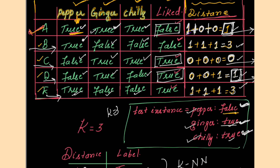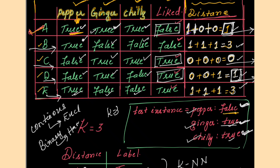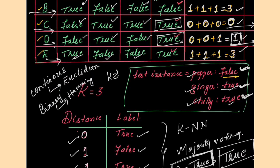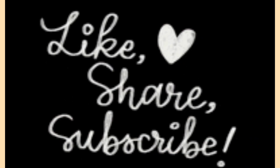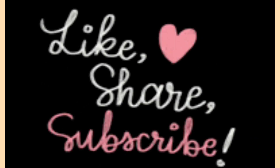The criteria for predicting the label remains the same in KNN, whether you are using Hamming distance or Euclidean distance. I have solved one session using Euclidean distance and in this session I have solved an example using Hamming distance. When do you use Hamming distance? When attribute values are binary or categorical. When attribute values are continuous, use Euclidean distance. Hope you find this session helpful. Please like, share and subscribe. Thank you, bye-bye and take care.